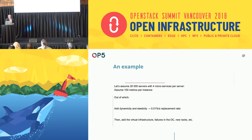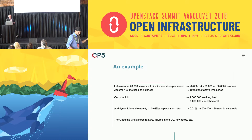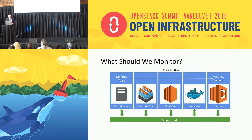Let's assume you've got 20,000 servers with four microservices per server and 100 metrics per instance — that's about 100,000 instances. Out of that, about 2 million are long-lived and about 8 million are ephemeral, going up and down dynamically. When you look at the dynamicity and elasticity of the process, a 0.01% rate of change equals about 6.9 million new time series per day. When you start dealing with data at that velocity, you've got to have some way to manage it.